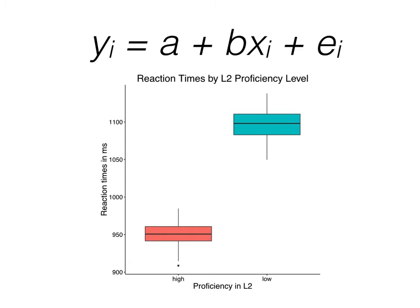To understand how to look at this with linear regression, first we need to change our categories, our levels of our categories, high and low, to numbers, 0 and 1. So now our default level, high proficiency, becomes the number 0 in our model, and our non-default level, low proficiency, becomes the number 1 in our model.